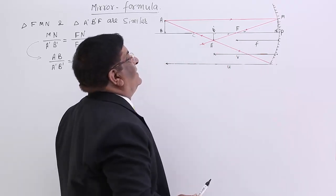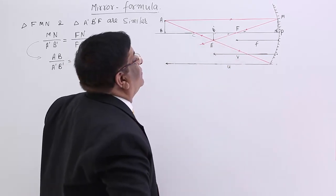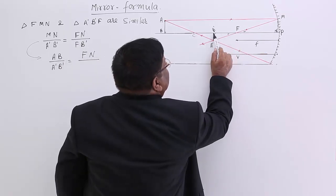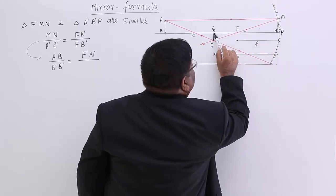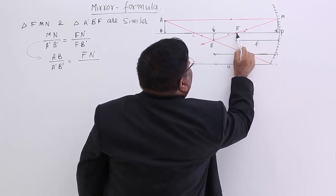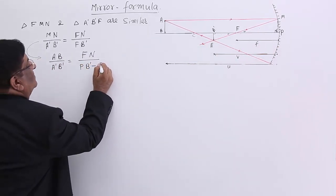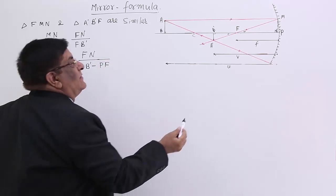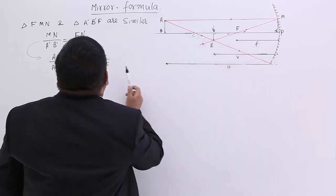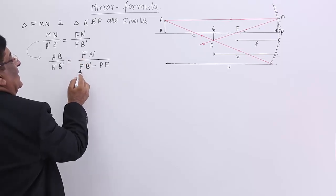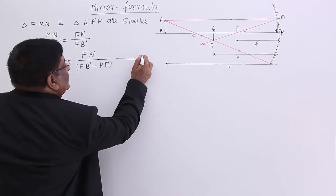FB' has to be changed. FB' is equal to the total line PB' minus PF. So this is FB' = PB' − PF. So FB' is placed like this and this is equation number 1.